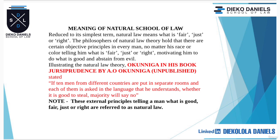The philosophers of natural theory hold that there are certain objective principles in every man, no matter his race or color, telling him what is fair, just, and right, motivating him to do what is good and abstain from evil. Imagine telling a child to put his hand on fire — the moment the hand goes near fire, the child immediately withdraws it, because the child knows the difference between what is good and what is bad. Instinctively, every human being knows what is right and what is wrong.